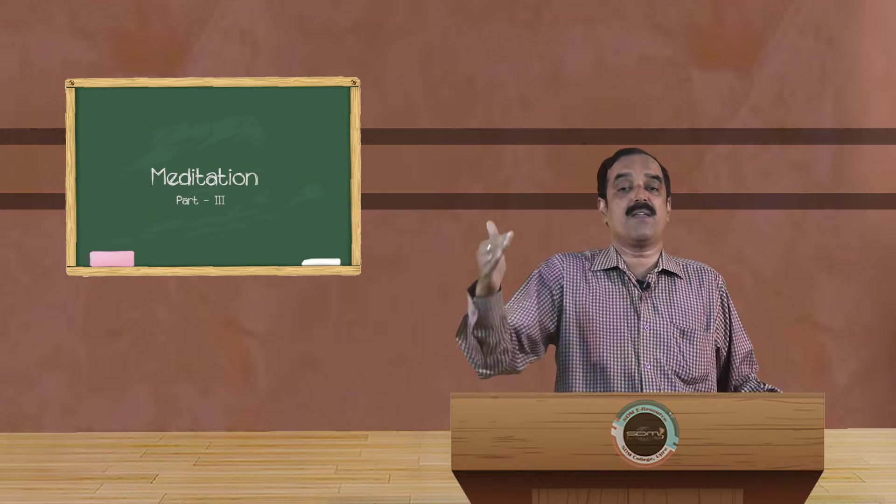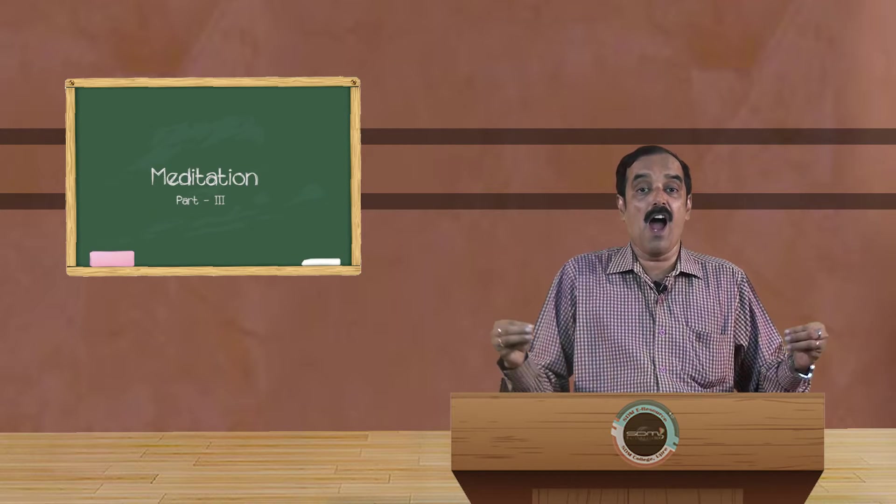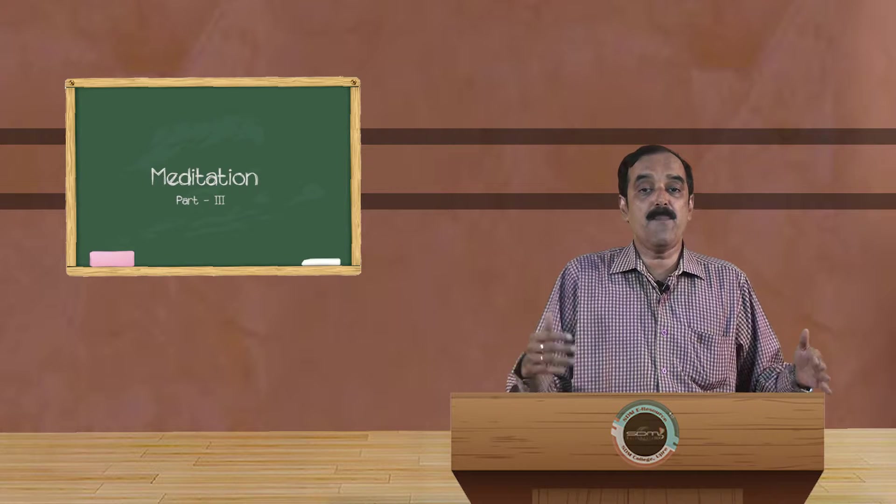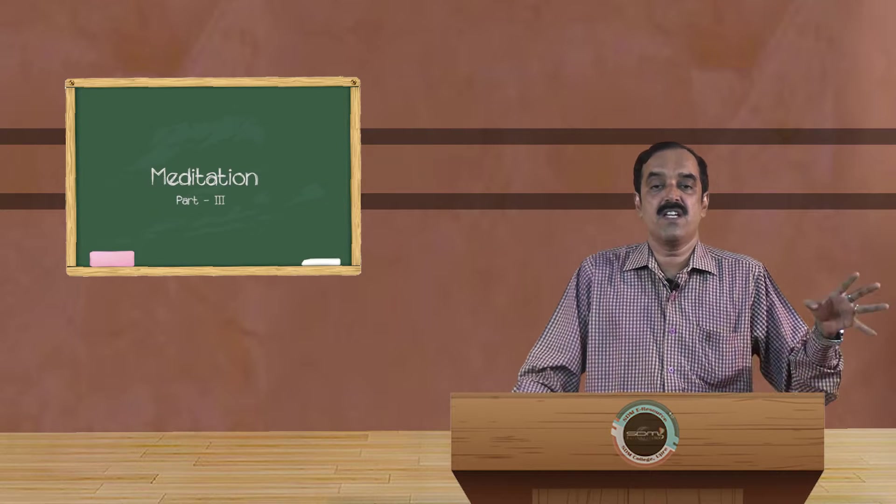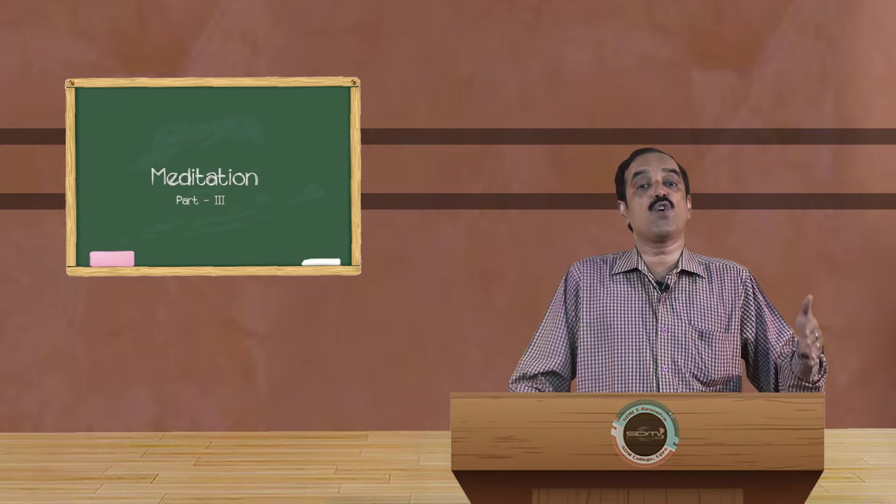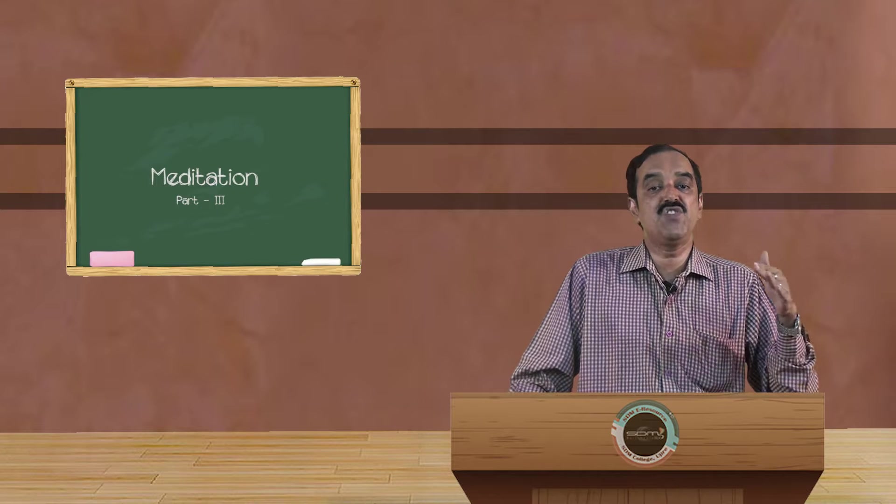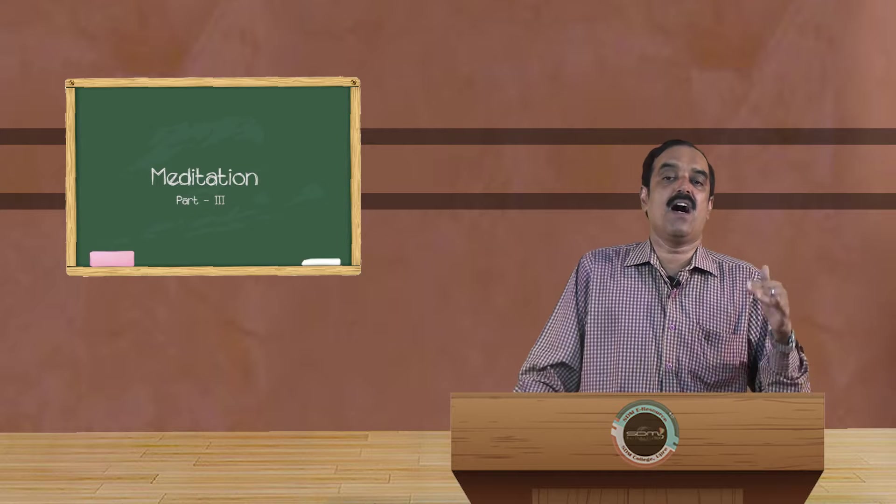Annamaya is physical body, grosser body. Deep to that is Pranamaya, sheath of Prana and Nadis. And deep of that is Manomaya. It is a kosha of emotions, kosha of mind, kosha of feeling. Beneath that there is a kosha of intellect, that is Vijnanamaya kosha. And sheath of bliss, that is Ananda.